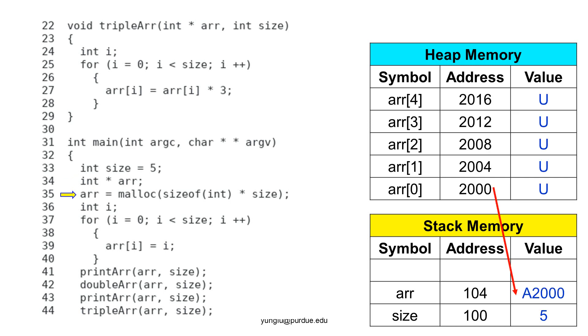Line 35 uses malloc to allocate memory. Malloc finds a piece of memory in heap and returns the starting address of this piece of memory. Suppose malloc returns 2000, the value of arr is 2000. Please notice that the allocated heap memory is not initialized yet. Thus, their values are marked u. Line 36 creates an integer called i. Its value is not initialized. It is put on the stack memory. Lines 37 to 40 assign 0, 1, 2, 3, and 4 to the array's elements.